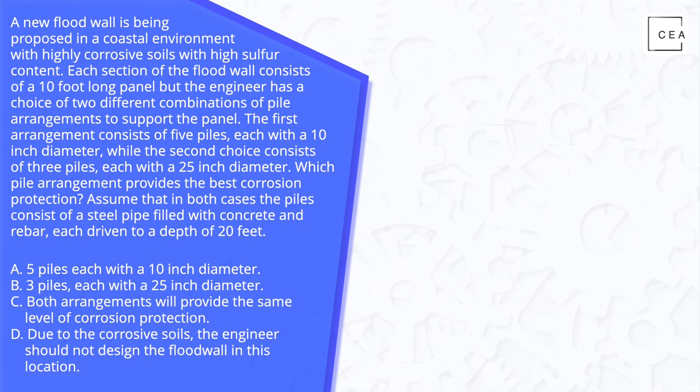A new flood wall is being proposed in a coastal environment with highly corrosive soils with high sulfur content. Each section of the flood wall consists of a 10 foot long panel but the engineer has a choice of two different combinations of pile arrangements to support the panel.